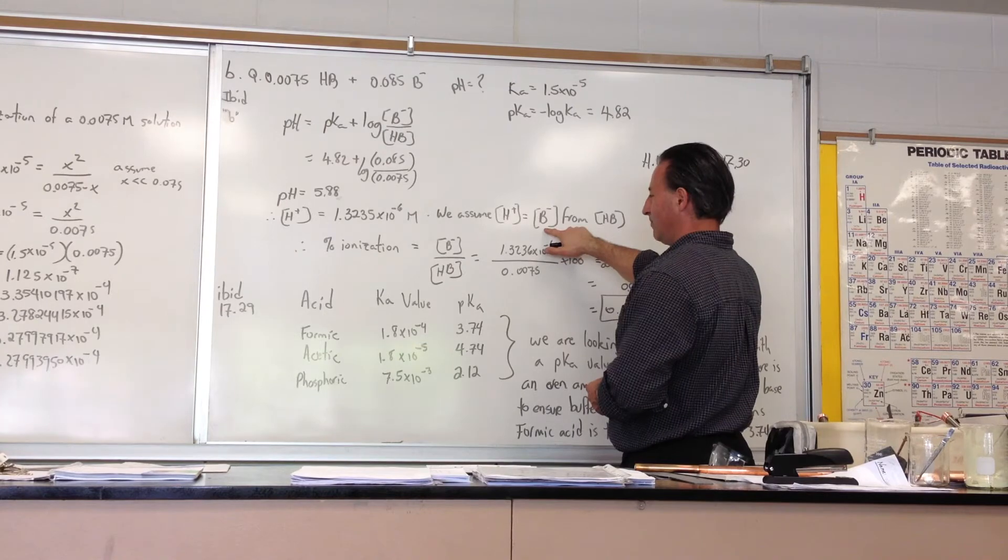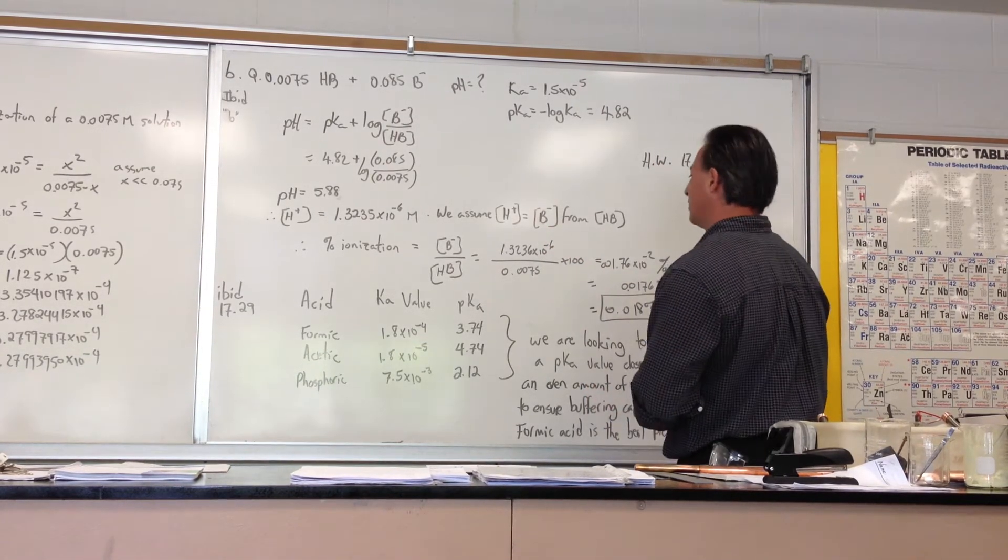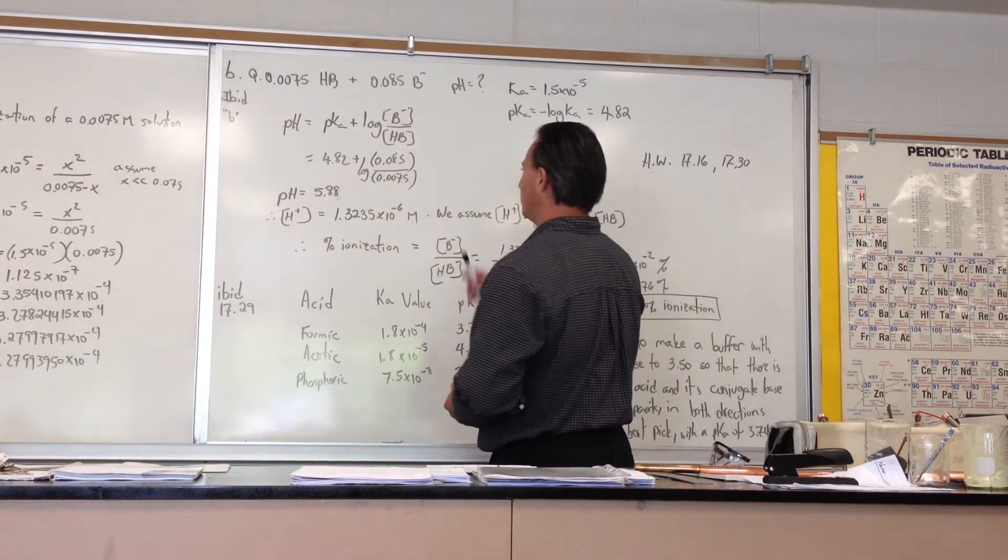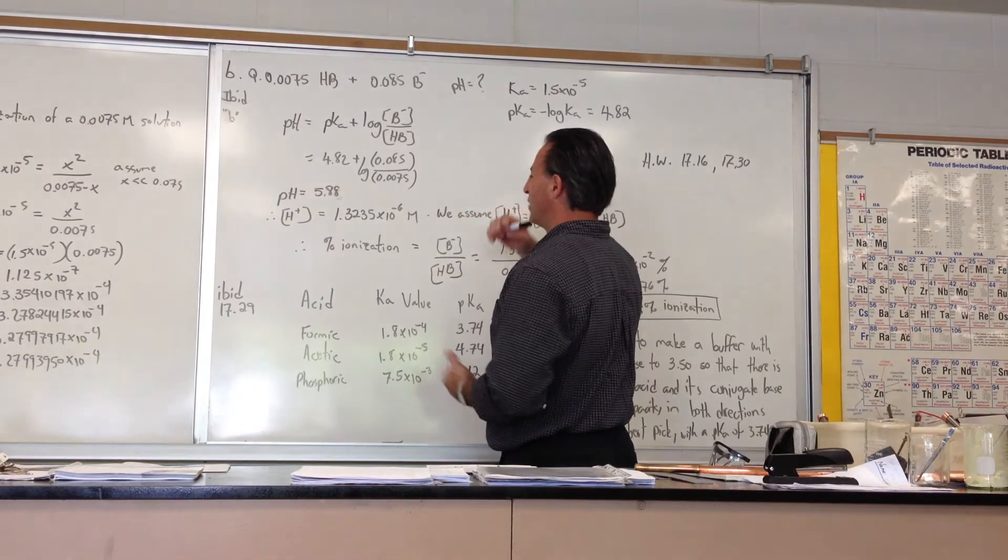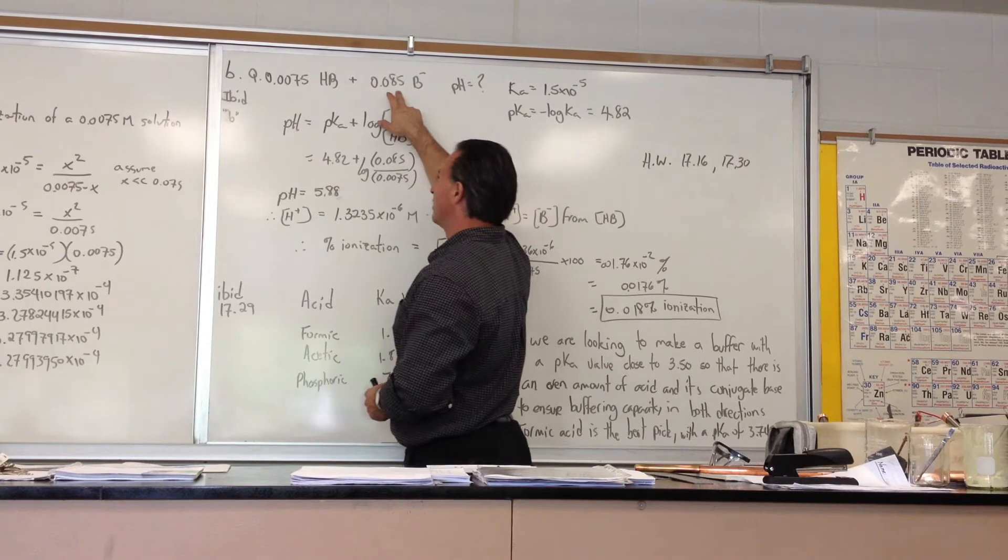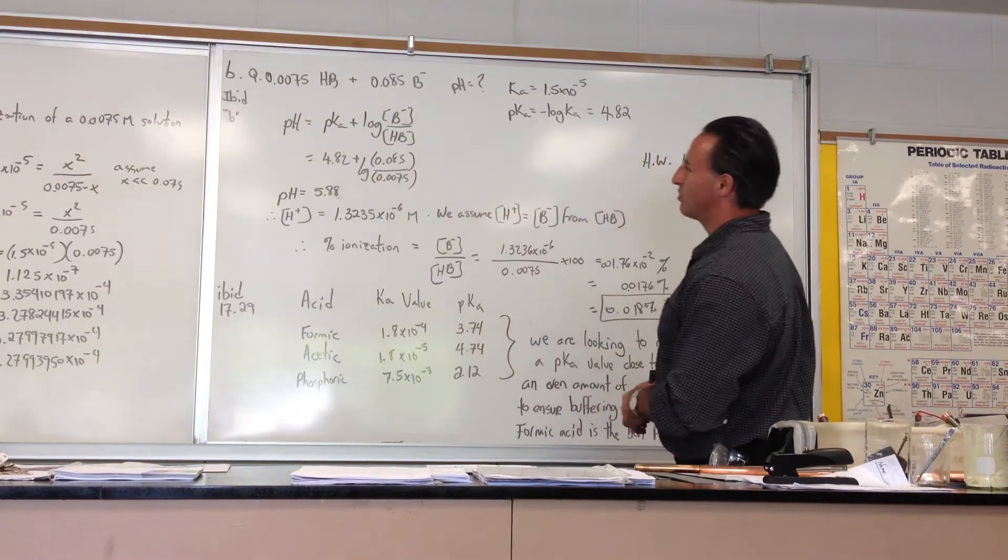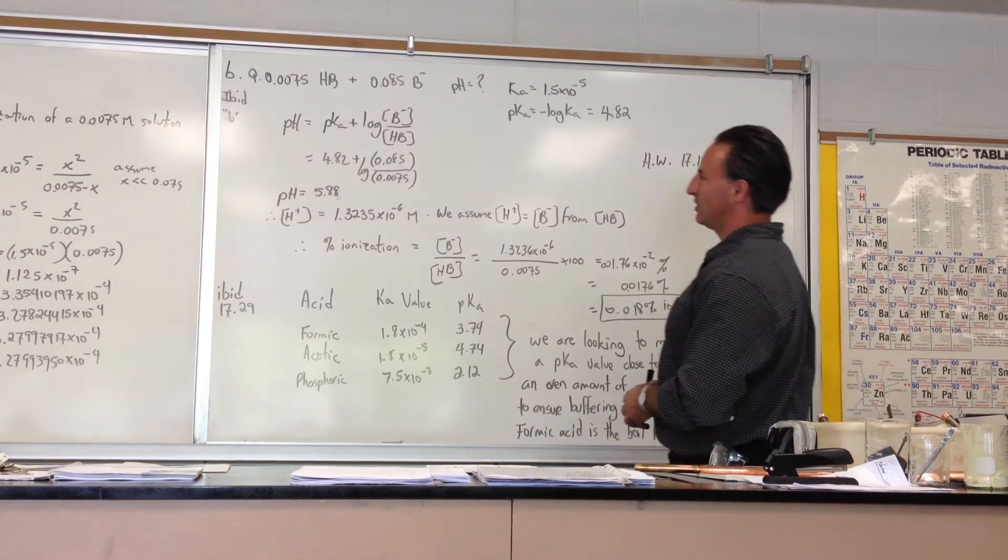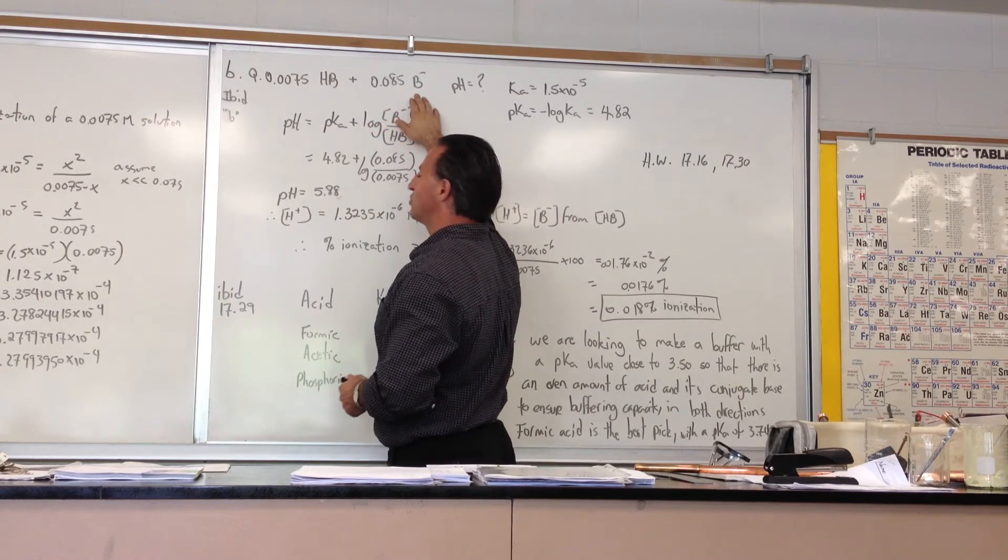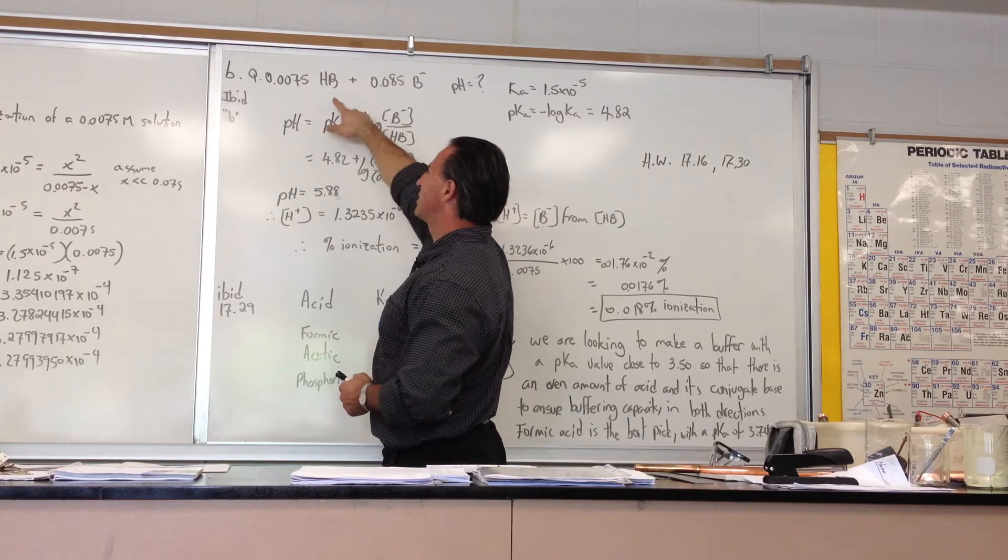And also, of course, the conjugate base, the additional conjugate base that comes into the solution has to have been ionized from the original acid. We can't do the percent ionization calculation where you put this as the numerator and that as the denominator because you would get a percent ionization greater than 100%. That would be an error that you might be tempted to fall into. You have to assume that any additional base that is formed, any initial conjugate base that forms over and above this 0.085 is coming from the HB.